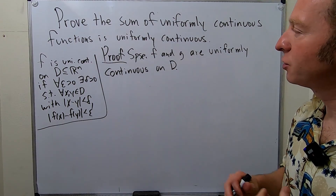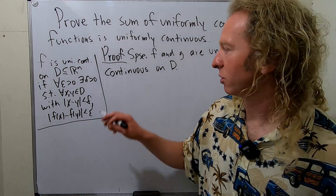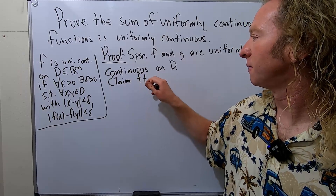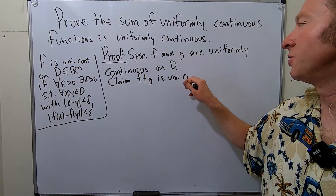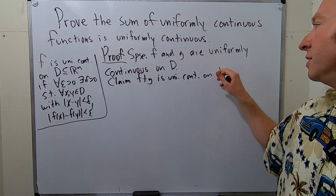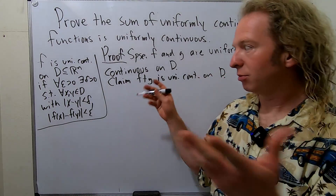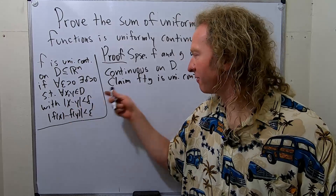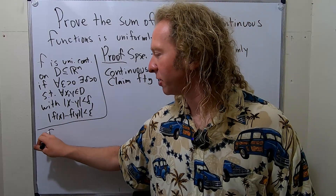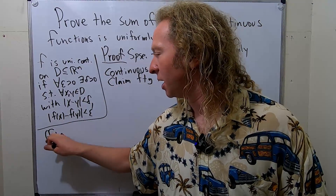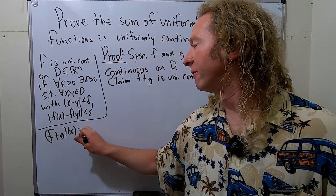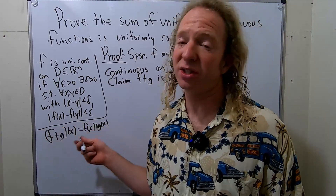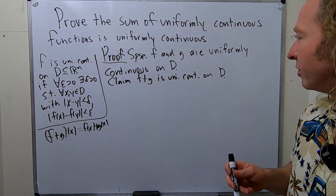Now we have to show that the sum is uniformly continuous. Claim: the function F plus G is uniformly continuous on D. To show it's uniformly continuous, we have to show that this definition is satisfied for the function F plus G. By the way, F plus G is a function — it takes an element x and gives you f(x) plus g(x). This is the definition of F plus G; it's just the sum.